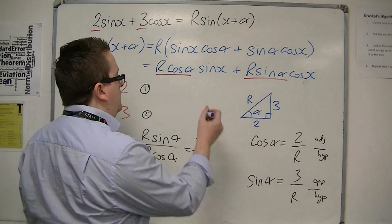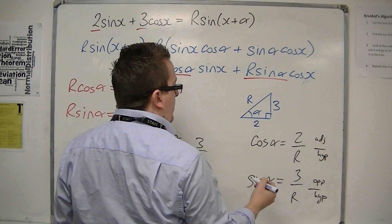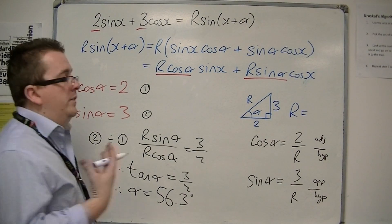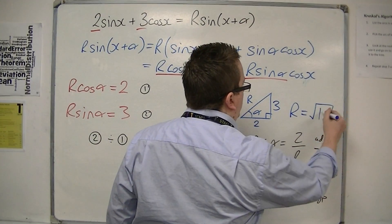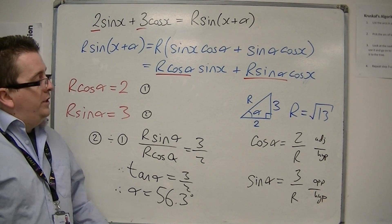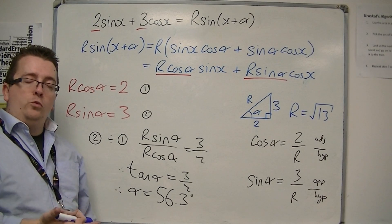Then r is the square root of 2 squared plus 3 squared. So 4 plus 9, 13, so square root of 13. So you can use a triangle method there, or you can do a similar way of substituting these into sin squared plus cos squared equals 1, for example. That works as well.